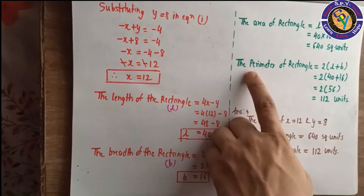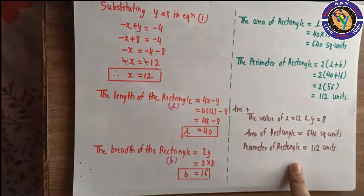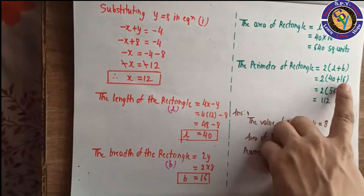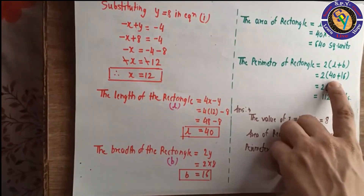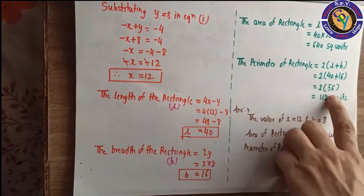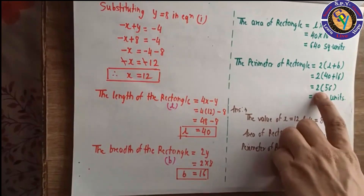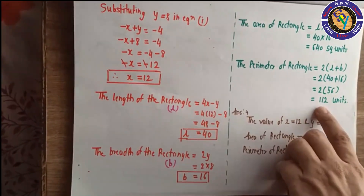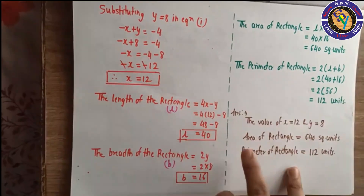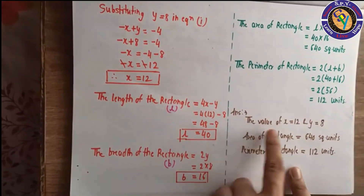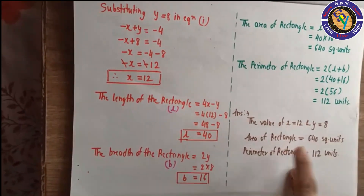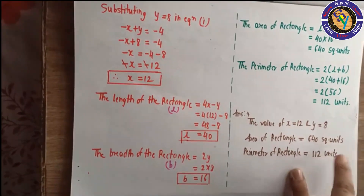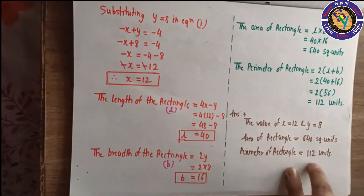For the perimeter of the rectangle, using 2 into bracket L plus B: 2 into bracket 40 plus 60 equals 2 into 100. So the perimeter is 200 units. These are the answers: x equals 12, y equals 8.